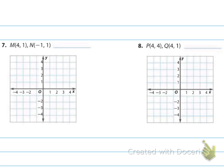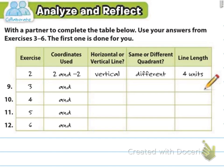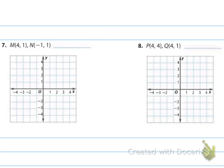Now there are two more examples, seven and eight — if you got all the others correct you can skip ahead. For problem seven, four comma one: go over four, up one. Then negative one comma one: go over negative one, up one. The y's are the same, so we handle the x's — four plus one because they're in two different quadrants — giving five units total. You can count one, two, three, four, five to verify.